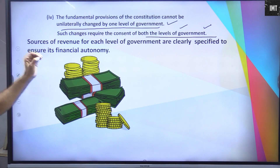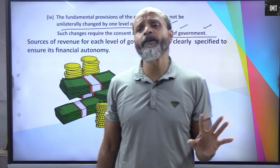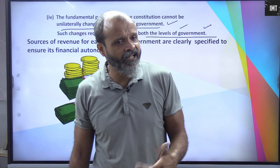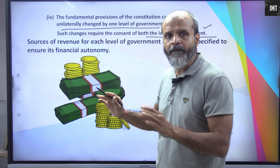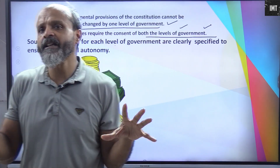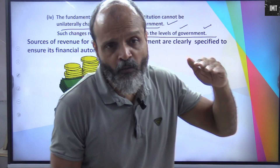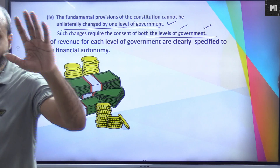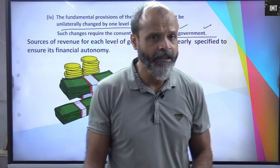Sources of revenue for each level of government are clearly specified to ensure its financial autonomy. To run any government, the first thing needed is money — and that money comes from people through taxes. The constitution has specifically determined how the people's money will be distributed: what taxes the state will levy and what taxes will be levied at the central level — this is clearly specified.